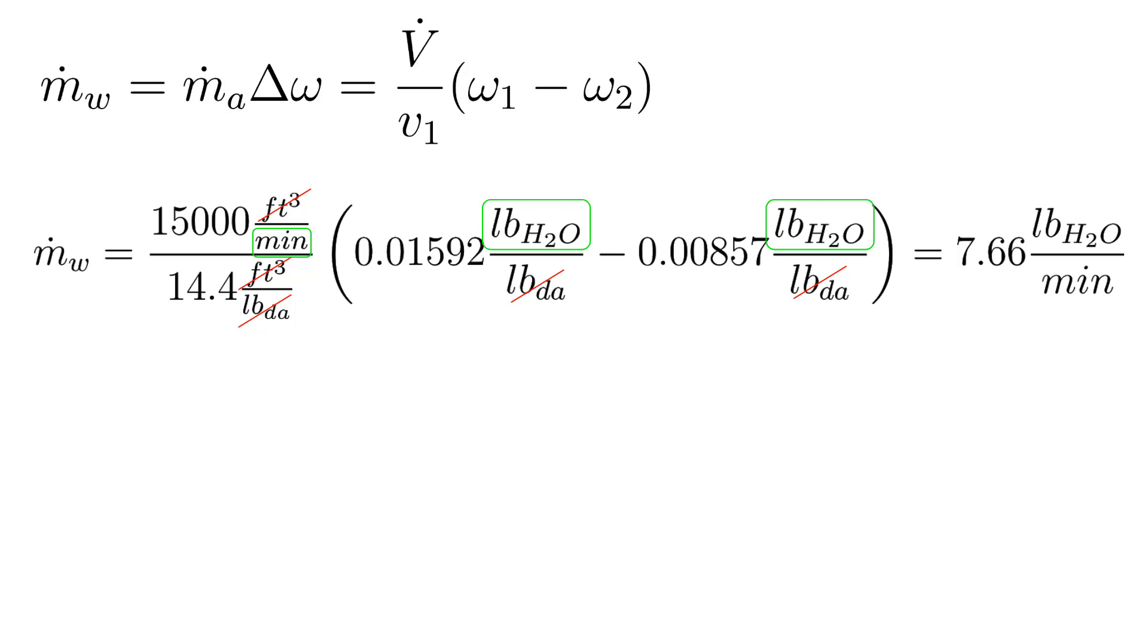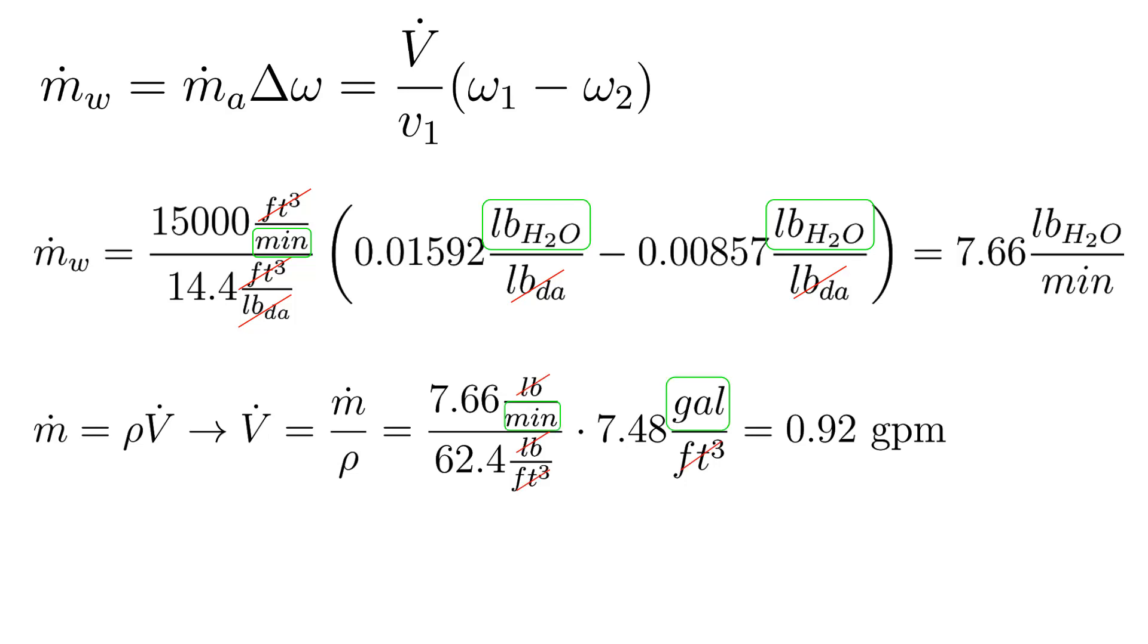But we want the answer in GPM, which is a volume flow rate. So we can use mass equals density times volume, and rearrange to get volume flow rate by itself. Then plug in and divide by the density of water, which is 62.4 pounds per cubic foot, and convert the volume to gallons instead of cubic feet, they're just under seven and a half gallons in a cubic foot. Again, cross out the units, we'll be left with gallons per minute. And the final answer is 0.92 gallons per minute.